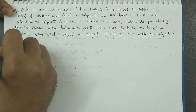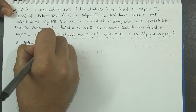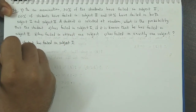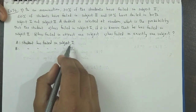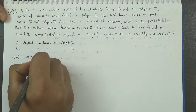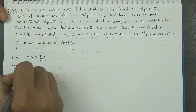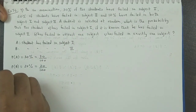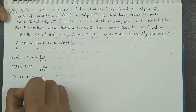Suppose event A defines that the student has failed in subject 1, and event B defines that the student has failed in subject 2. The probability of A is 30%, which we can write as 30 by 100. Probability of B is 20%, that is 20 by 100. And the probability of failing in both, P(A intersection B), is 10%, that is 10 by 100.